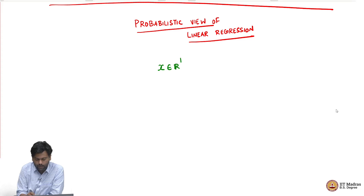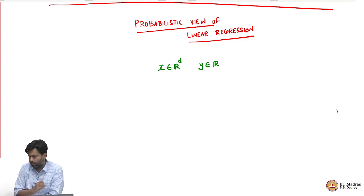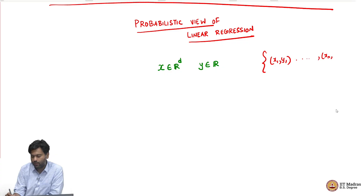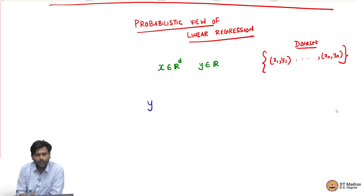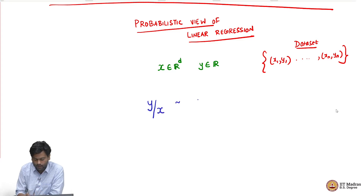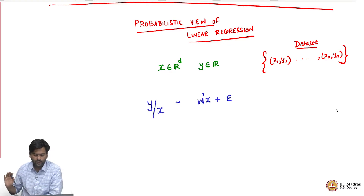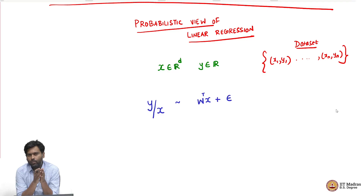In the linear regression problem, you have data points in d dimensions, the labels are real numbers, and you have a dataset which I can write as x1, y1, ..., xn, yn. The probabilistic model we are going to assume is that the label given the data point is generated as W transpose x plus some noise epsilon. This means I am not trying to model how the features themselves are generated — I am just trying to model the relationship between features and labels in a probabilistic way.